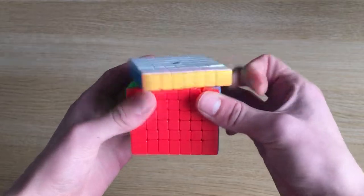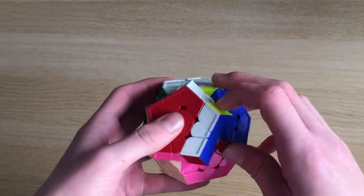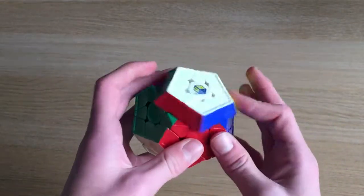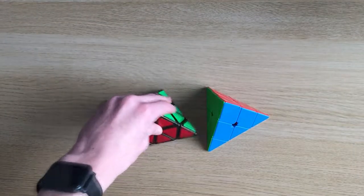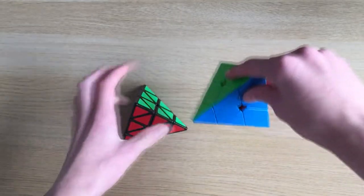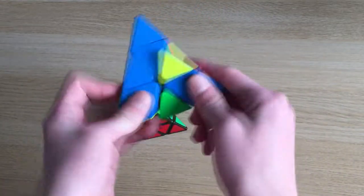My only 7x7, the MeiLong. My only Megaminx, the YuXin V2. Not too bad for the price. And my only Clock, the LingAo. I have two Pyraminxes. The Moyu Pyraminx. And the YuLong V2, which is much better.